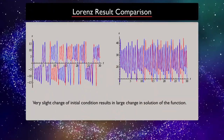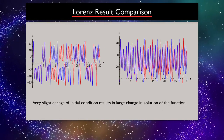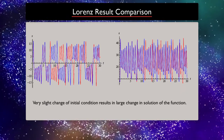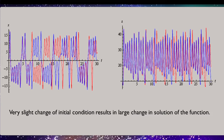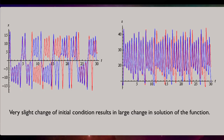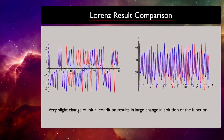These two graphs show the time dependence of functions x(t) and z(t) in the Lorenz attractor for the recommended parameter values. The blue curves are related to initial conditions x and y equals 1 and z equals 10. The red curves are related to initial conditions x and y equals 1, but with z increased by 0.01. A very slight change of initial conditions results in a large change in the solution of the function, as you can see here.